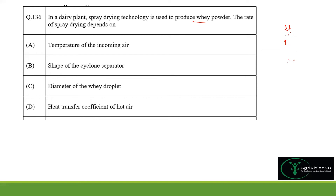The powder is collected and transferred to a cyclone separator to separate particles depending on mass or particle size. Factors affecting the rate of spray drying include the temperature of incoming air — lower temperature decreases the rate and higher temperature increases it.